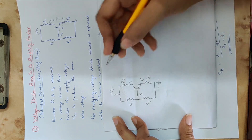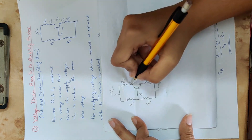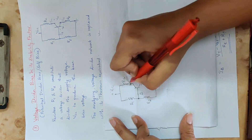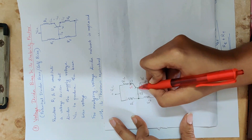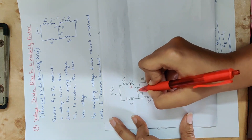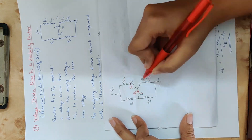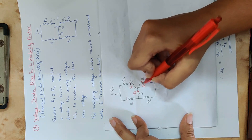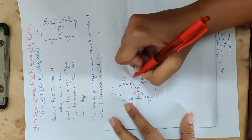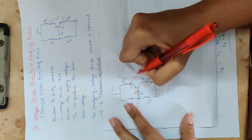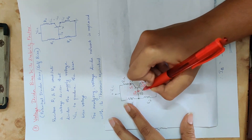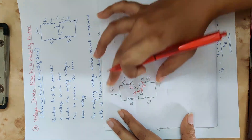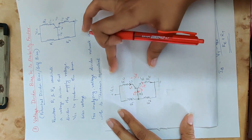We will mark the collector current IC, the base current IB, and the emitter current IE. We also mark the voltages: VCC plus and minus, and the base-emitter voltage VBE.